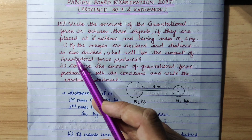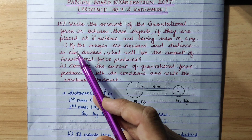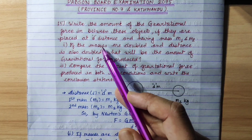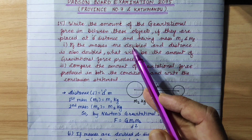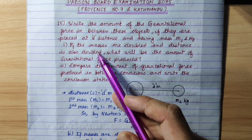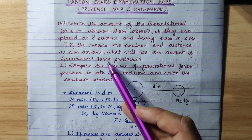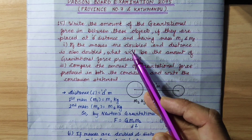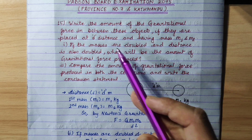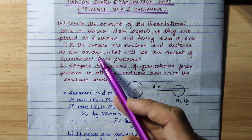The first question: if the masses are doubled and the distance is also doubled, what will be the amount of gravitational force produced? The mass is doubled and the distance is also doubled.